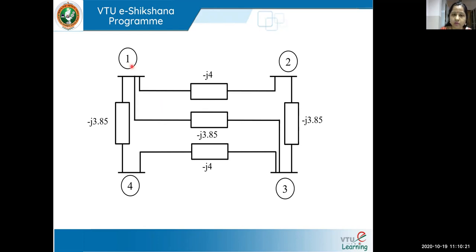Y11 is the addition of y12 plus y13 plus y14, so Y12 is going to be the negative of the series admittance of the line between bus one and two — that is, negative of minus j4, which gives plus j4. Wait, Y12 is the negative of y12, so it is minus j4. Y13 is going to be plus j3.85 and Y14 is going to be plus j3.85. So the off-diagonal elements are the negative of the series admittances.